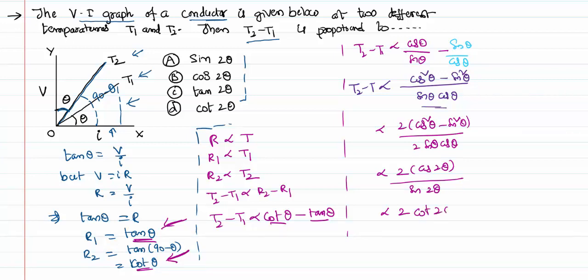So the possible answer in the options is cot 2θ. T2 minus T1 is directly proportional to cot 2θ. Option 4 is the answer. This is how we have to solve this problem. Thank you for watching.